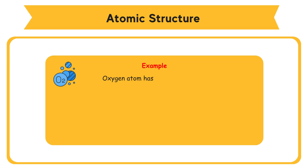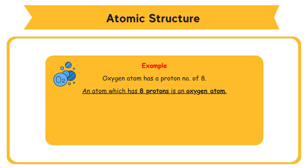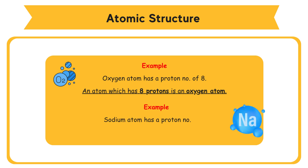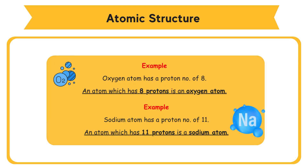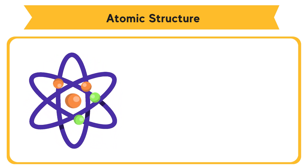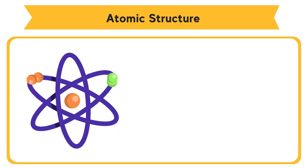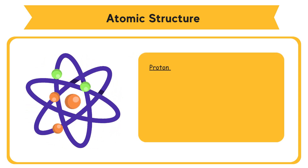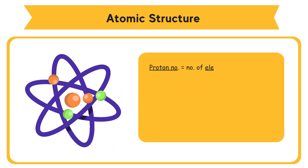Each element has its individual proton number. The proton number can be used to identify an element. For example, an oxygen atom has a proton number of 8 — any atom with 8 protons is an oxygen atom. A sodium atom has a proton number of 11. In a neutral atom, the proton number is also the number of electrons.